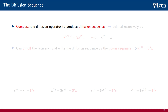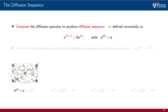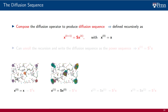The diffusion operator can be composed with itself to produce the diffusion sequence. We formally define this sequence through recursive multiplication by the shift operator S. Element 0 of the diffusion sequence is the signal itself, and subsequent components are such that the k plus first element of the diffusion sequence is the product of S and the kth element of the diffusion sequence. The 0th entry of the diffusion sequence is the graph signal itself. Element 1 is the diffusion of element 0 — the diffused signal Sx we have just discussed.